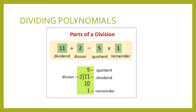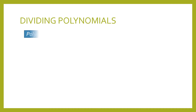This time, we move on to dividing polynomials. Here are the parts of a division: we have the dividend, the divisor, and the answer is called the quotient. If there is a remainder, then we name it as remainder. For the long method, the dividend is inside the division symbol, and we have the divisor, the quotient, and the remainder.